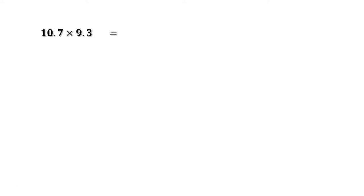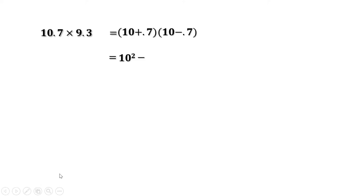Next part: 10.7 into 9.3. This can be written as (10 + 0.7)(10 - 0.7) = 10² - 0.7². 10² is 100 and 0.7² is 0.49. Subtracting, we get 99.51.